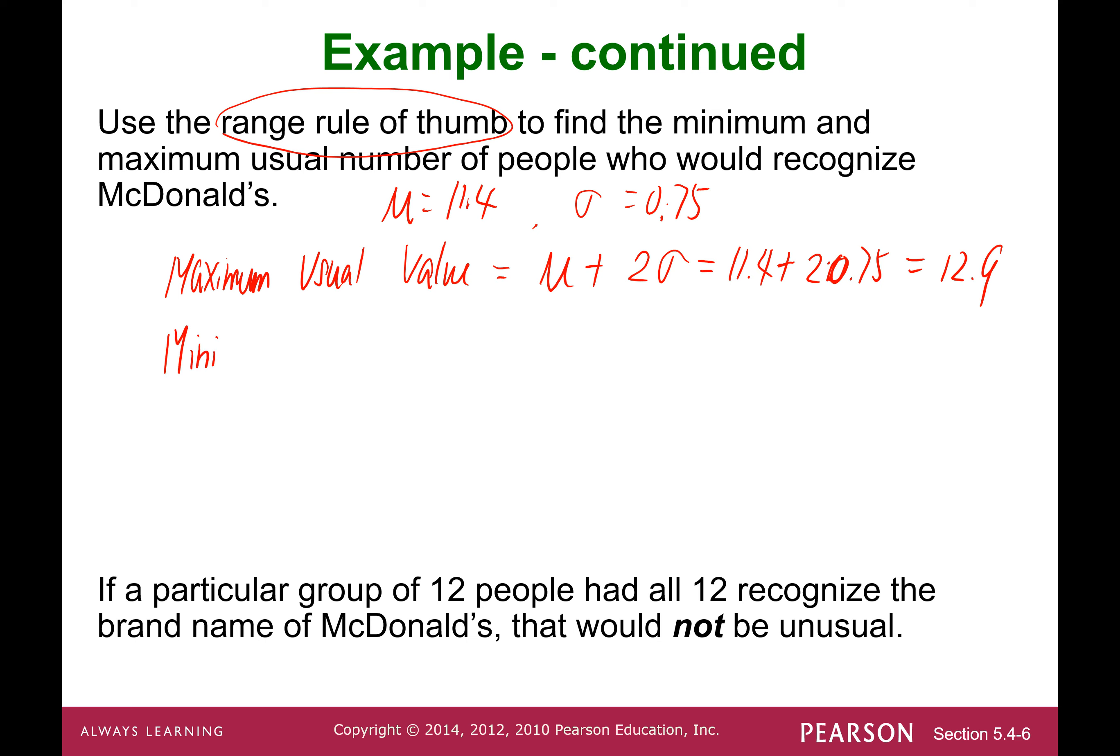Minimum usual value equals mu, population mean, minus 2 standard deviations. 11.4 minus 2 times 0.75 turns out to be 9.9.